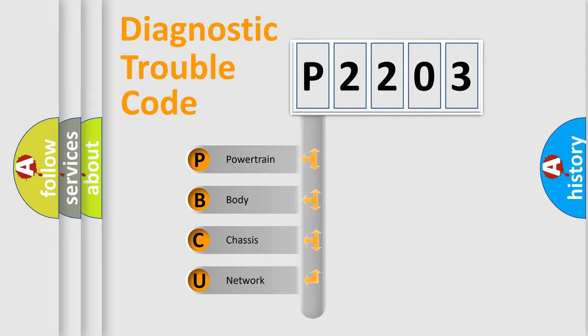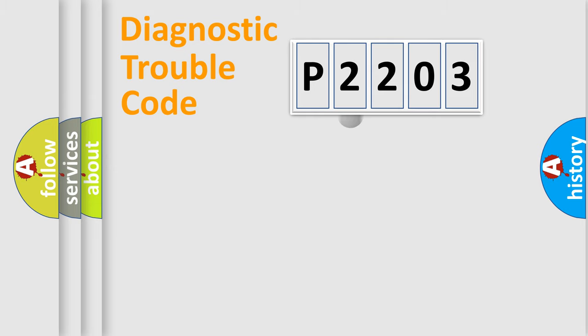We divide the electric system of automobile into four basic units: powertrain, body, chassis, network. This distribution is defined in the first character code.